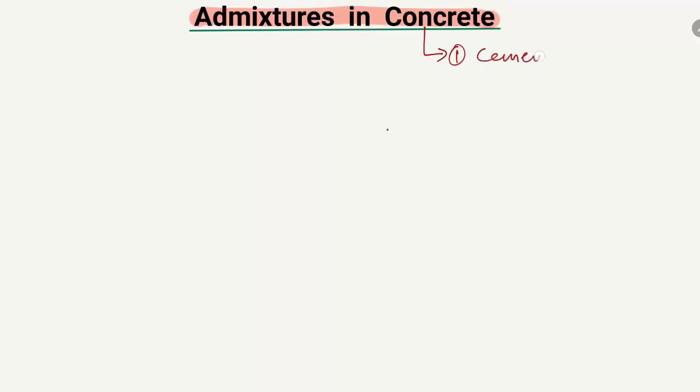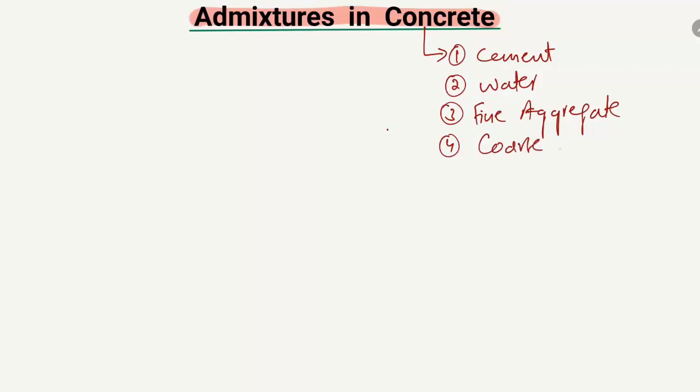Hello guys, welcome back to Seven Engineering YouTube channel. Please subscribe to our channel for daily Seven Engineering videos. In today's lecture we are going to discuss admixtures in concrete — why we use them and what are their benefits. Concrete is one of the most used construction materials on earth, and its basic components are cement, water, fine aggregate, and coarse aggregate.